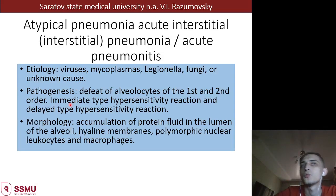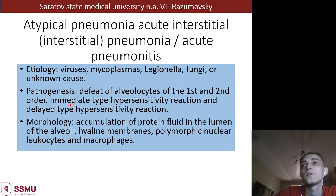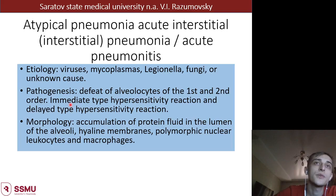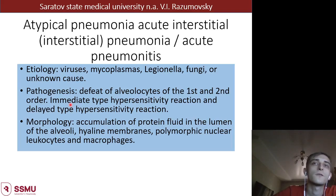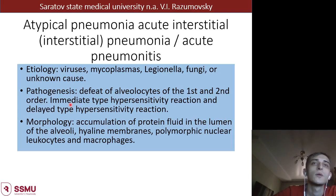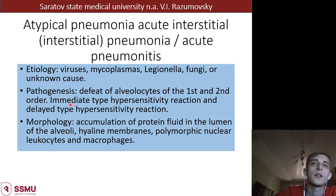Atypical pneumonia, or acute interstitial pneumonia, or acute pneumonitis. Etiological factors are most commonly viruses, mycoplasma, Legionella, fungus, or unknown causes. Pathogenesis involves defeat of alveolar cells of first and second order, with immediate and delayed type hypersensitivity reactions. Morphologically, we can see accumulation of protein and fluid in the lumen of alveoli, hyaline membranes, polymorphonuclear leukocytes and macrophages.